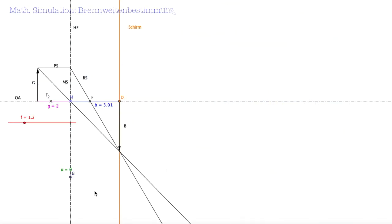Ich habe den Versuch, den ihr gerade im IBE gesehen habt, nochmal mathematisch simuliert. Wir haben hier die optische Achse, den Gegenstand – das war die beleuchtete 1 –, die Linse, die Hauptebene der Linse, den Mittelpunkt der Linse und die beiden Linsenbrennpunkte. Über Parallelstrahl, Brennstrahl und Mittelpunktstrahl erhalte ich hier einen Bildpunkt und damit ein scharfes Bild auf dem Schirm.